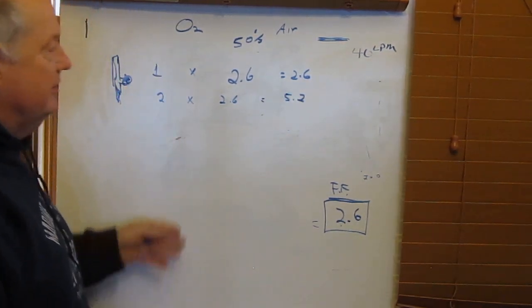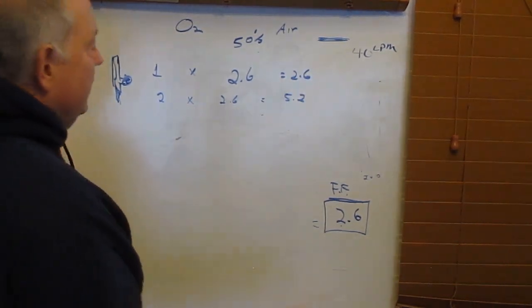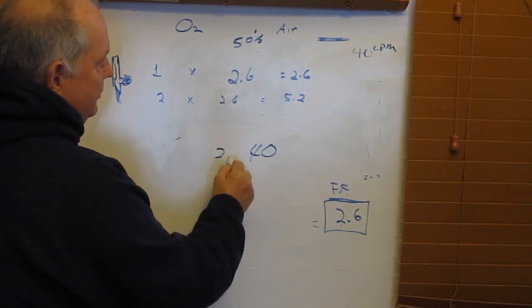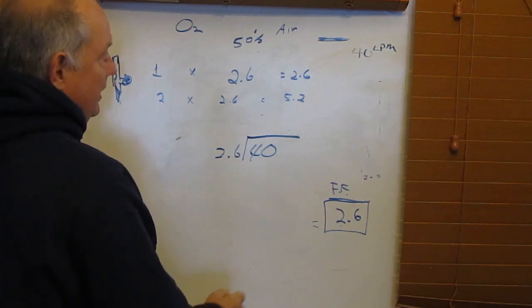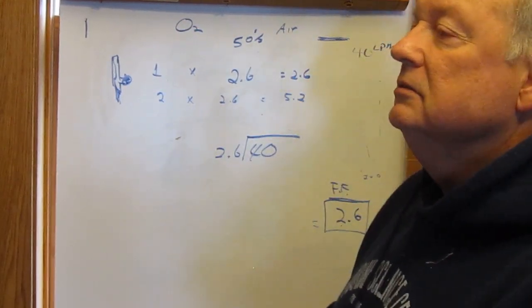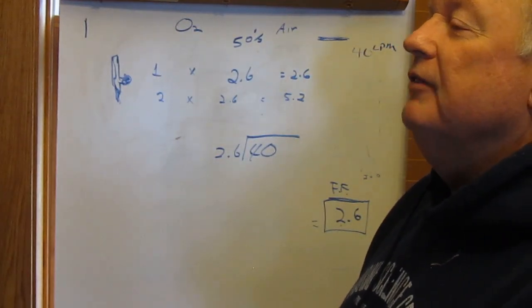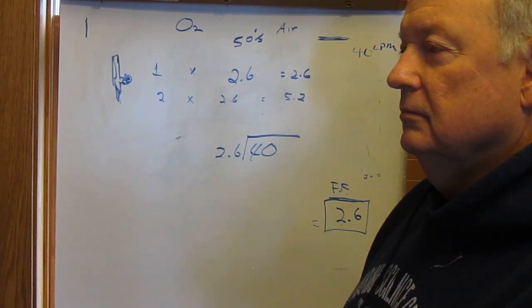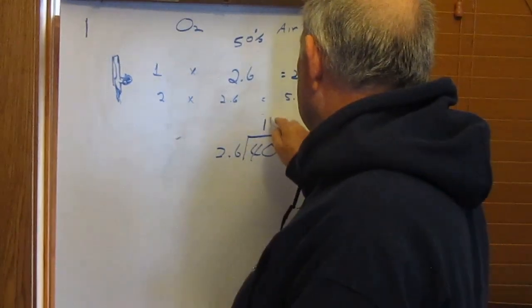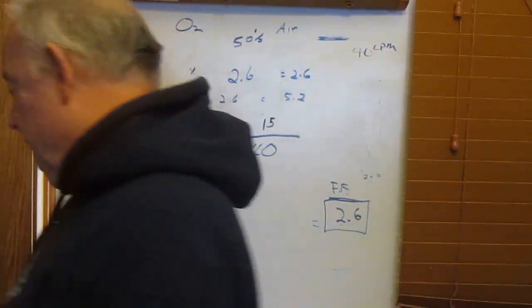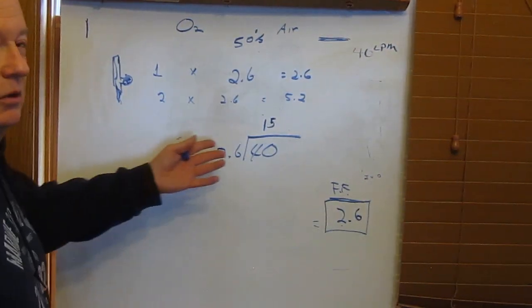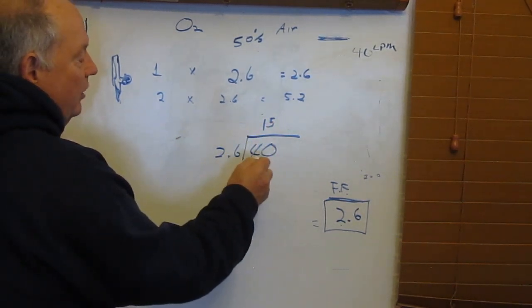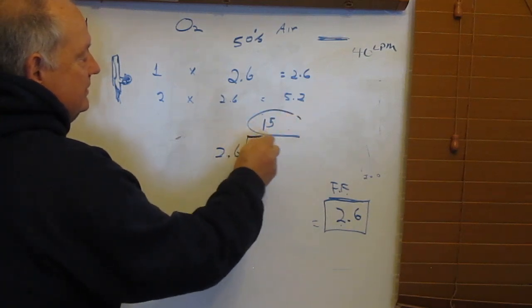We could keep doing that all the way down until we get right above 40. Or we could do some math and say 40 divided by 2.6 equals... Alexa, what is 40 divided by 2.6? 40 divided by 2.6 is 15.3846. We'll just drop everything past the decimal because we got some rounding in there. So now we can see 40 divided by 2.6 is 15.